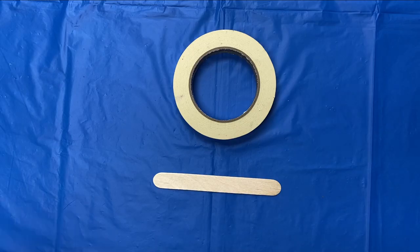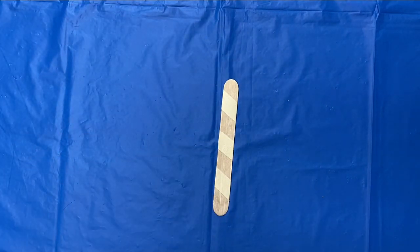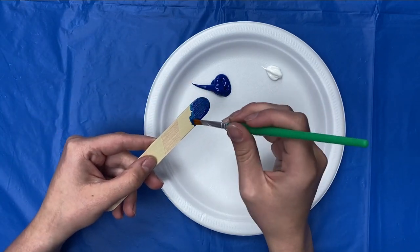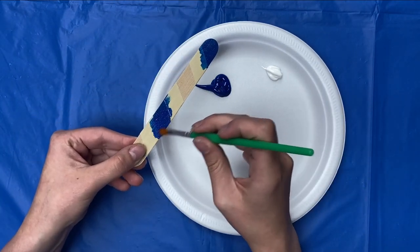Put tape on the popsicle stick wherever you don't want the paint to go. Get your paint out and begin to paint your popsicle stick.